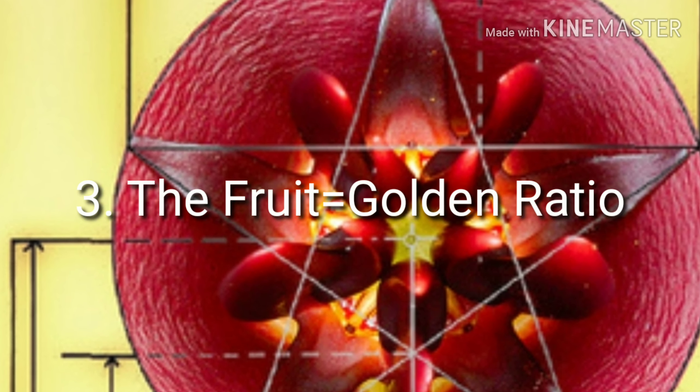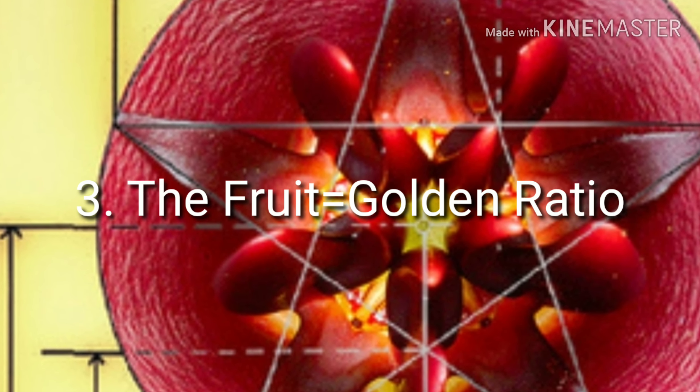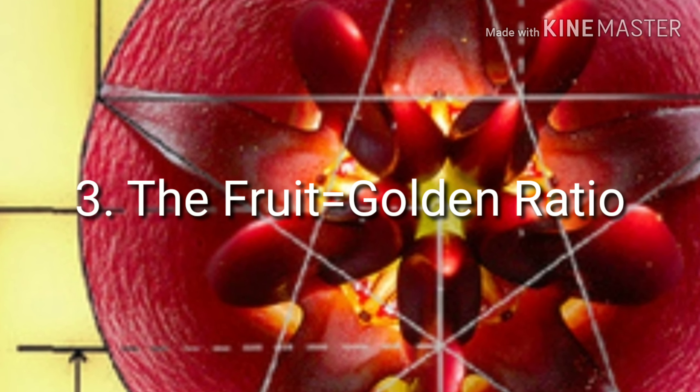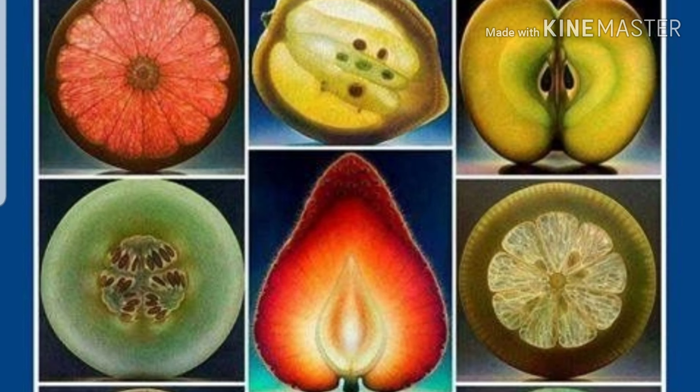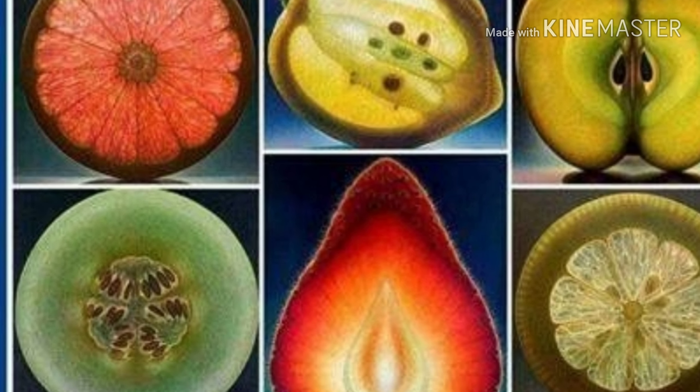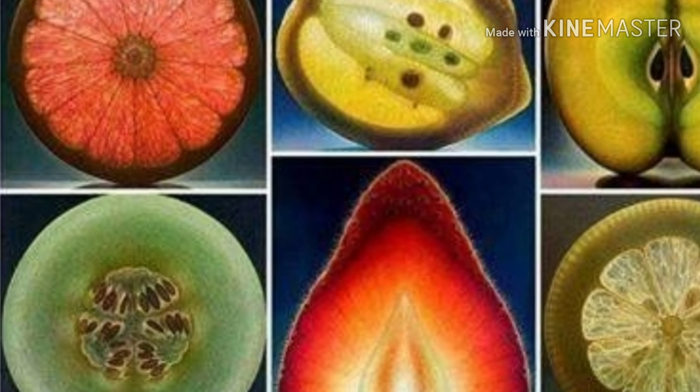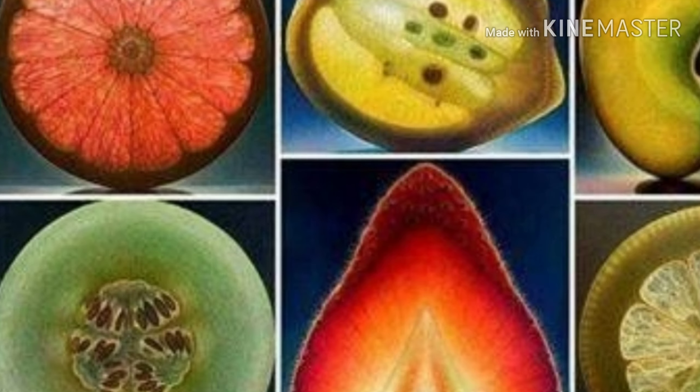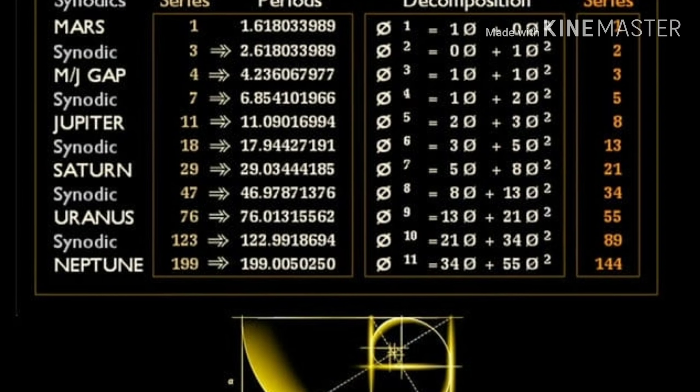Now, one more thing, one more component we're looking for. The fruit. The fruit also follows the Fibonacci series and the golden ratio. Look at the symmetry in this, the fractality of this beautiful fruit. It represents golden ratio.